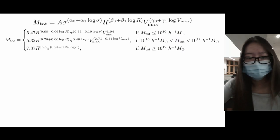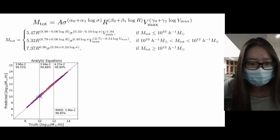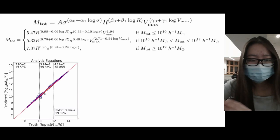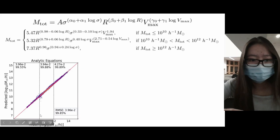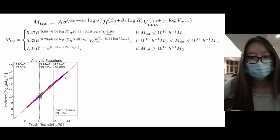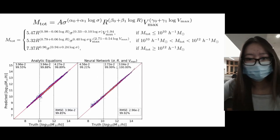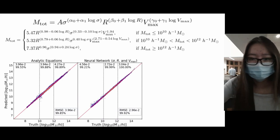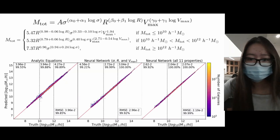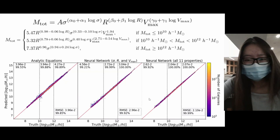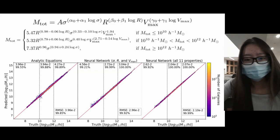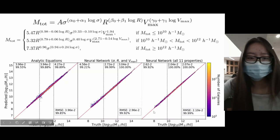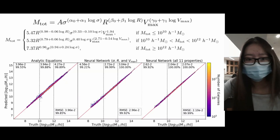Testing these analytic equations on CAMELS IllustrisTNG, there is no huge scatter or bias in the high-mass end that we saw before. Comparing with a neural network trained on the same three variables - radius, sigma, and Vmax - the analytic equations are now much more comparable in accuracy to the neural network compared to the symbolic regression model found earlier. A third plot shows how accuracy improves when the neural network has information from all 11 properties; it still achieves overall higher accuracy, meaning the analytic equations are just an approximation of the neural network's relation.